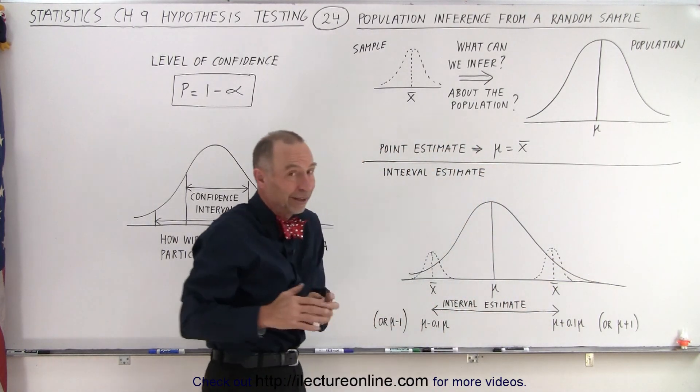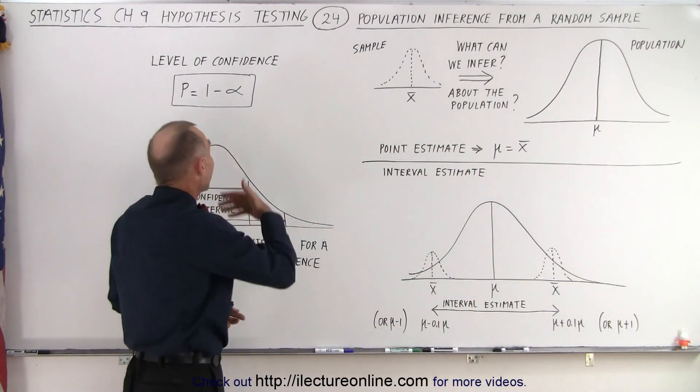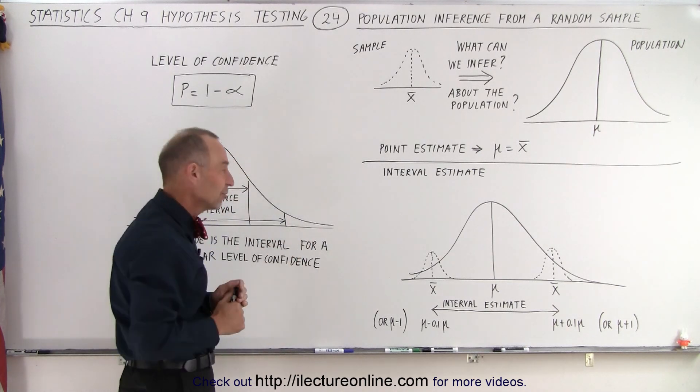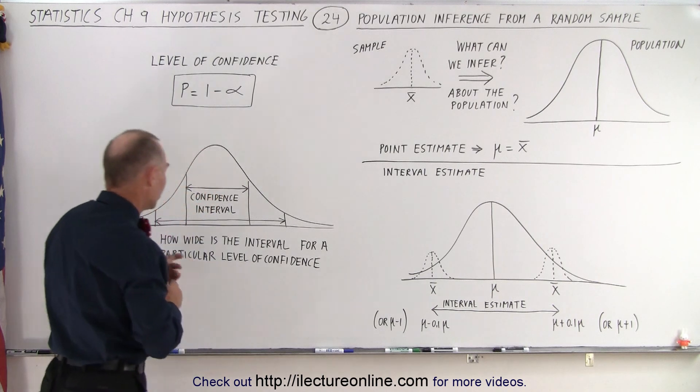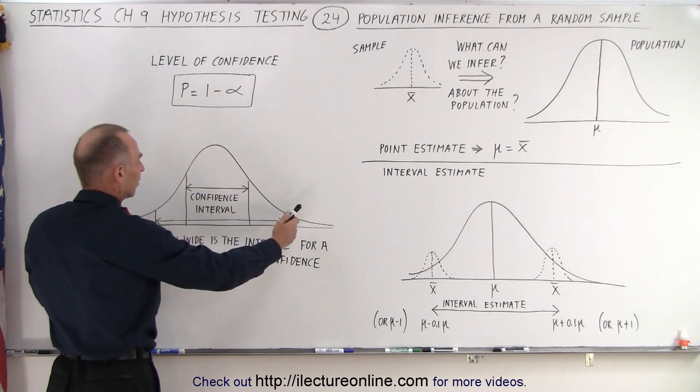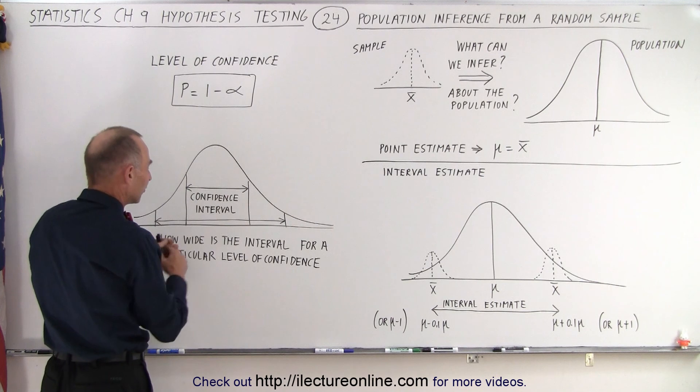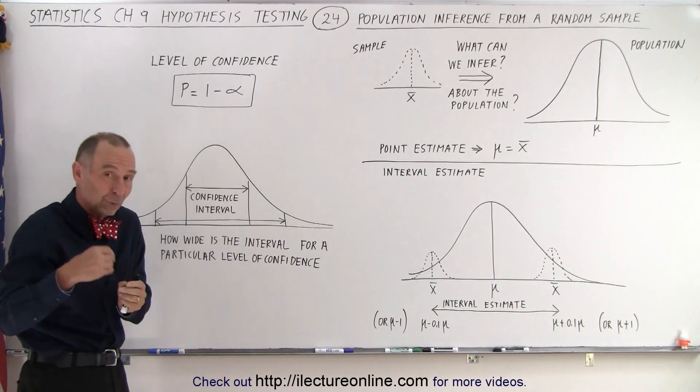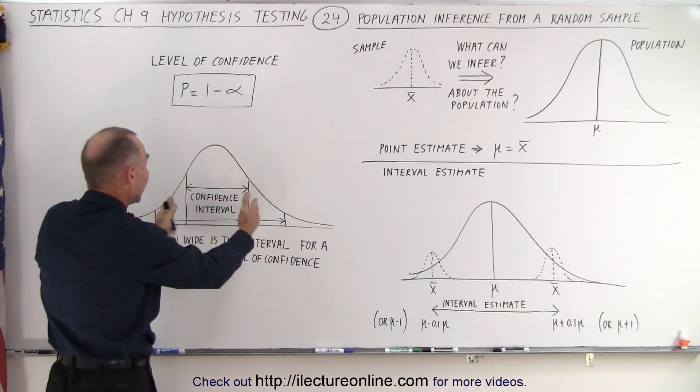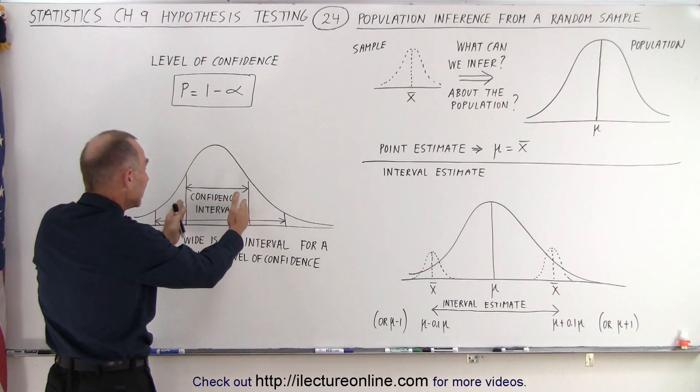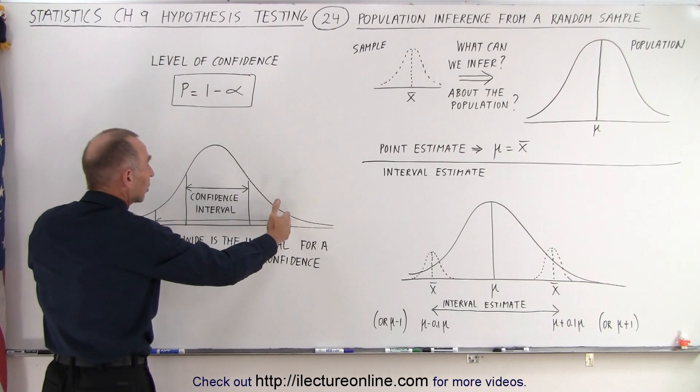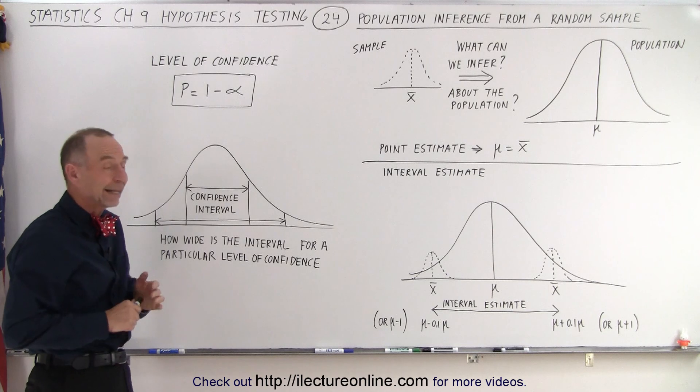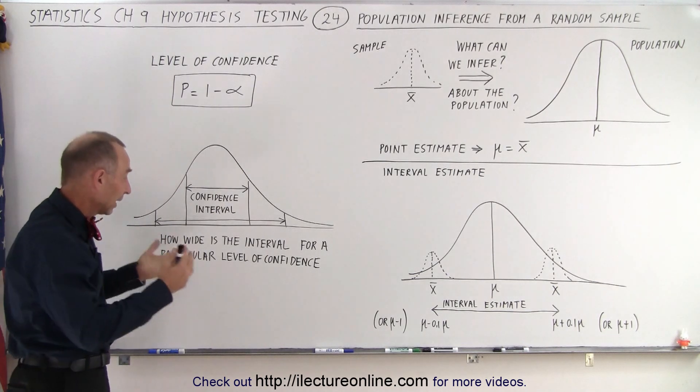The smaller you make your interval estimate, the less probability and the less confidence you have that you found the range that the population mean could fall into. And so therefore you can think of having a large confidence interval or small confidence interval. The smaller you make the interval, the less chance you have that the real value will fall in that interval. So you have less confidence that you found the interval, and if you make it larger you have a greater confidence level that the actual value will fall somewhere in that interval.